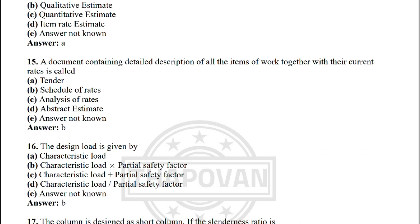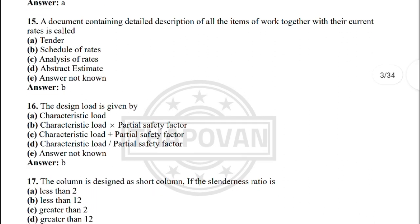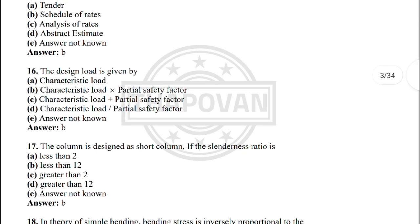Next: a document containing detailed description of all items of work together with their current rate is called — the correct answer is option B: schedule of rates.